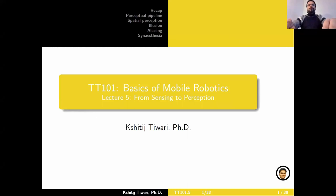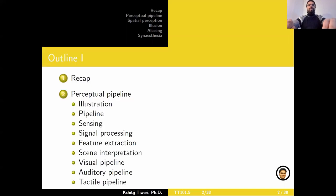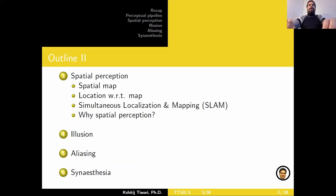Hello and welcome, or welcome back to my channel. This is Shatich, and on this channel we talk about robotics, research and academia. You're watching the fifth lecture in the lecture series TT101 Basics of Mobile Robotics, and in today's lecture we are going beyond sensing towards perception. We're going to look into a few perceptual pipelines, the various steps we go through when perceiving an environment, why a robot would want to do perception, and then we'll look into illusions, aliasing, and synesthesia.